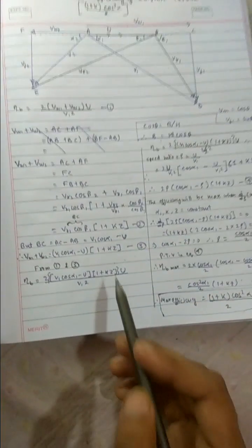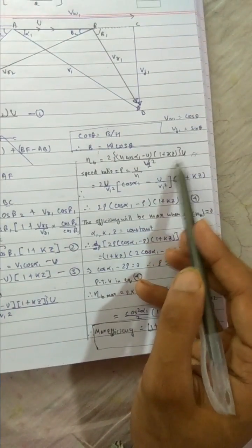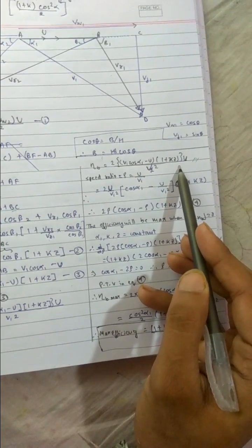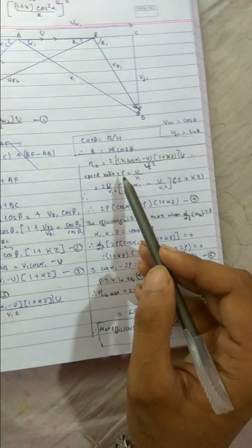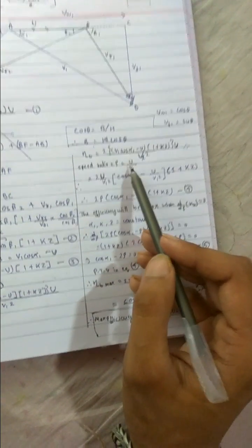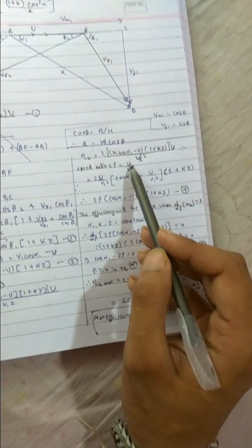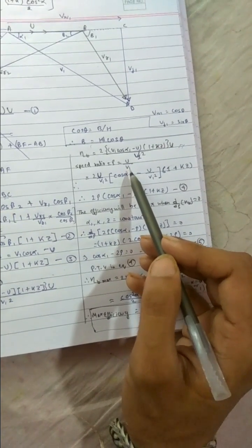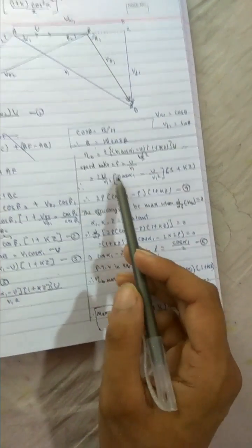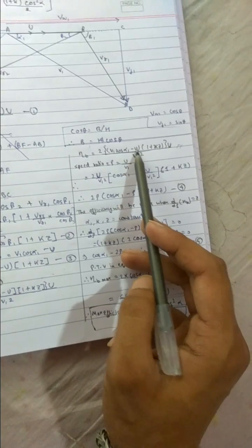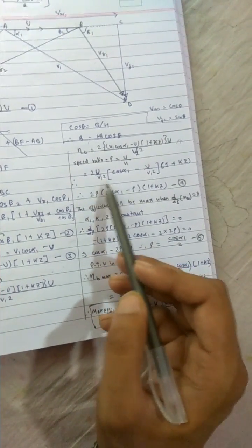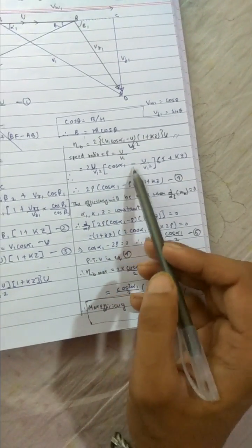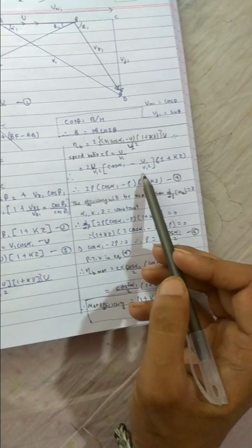Putting it in this equation we get this. Now again one more new thing is come, speed ratio, that is rho is denoted by U by V1, mean blade velocity by inlet velocity for the blade. So you can see this is U by V1, here also U by V1. Keeping it outside 2U by V1 in common, we get an expression something like this.